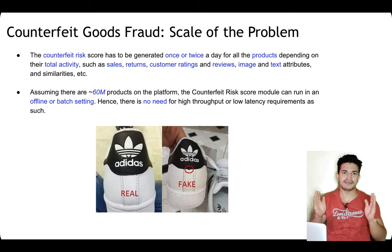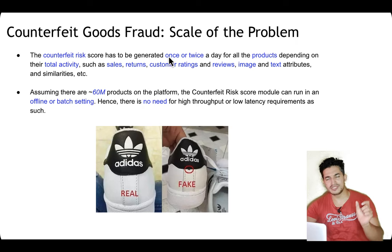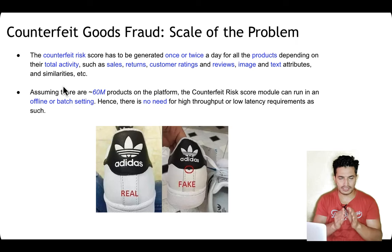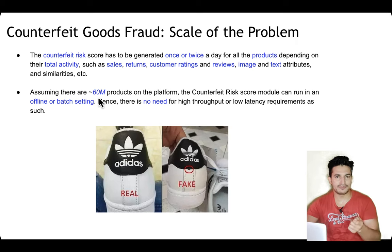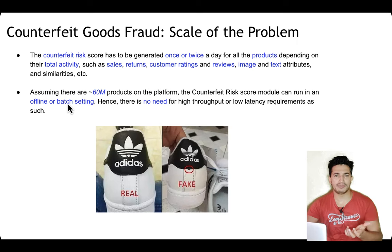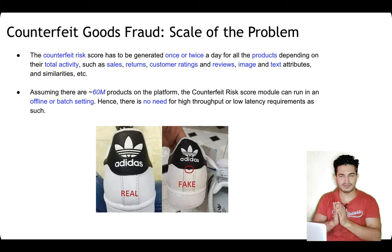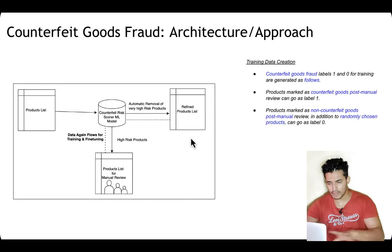Next, understand the scale of the problem. Unlike the returns fraud case which required a real-time system, the counterfeit risk score model only needs to run once or twice a day for all products, based on total activity like sales, returns, customer ratings, reviews, image and text attributes, and other similarities. It is not a personalized model — the counterfeit risk score is product-level, not buyer-specific. Assuming around 60 million products on the platform, the model can run in batch mode twice a day, with no need for high throughput or low latency. Very high risk products are automatically removed; medium-to-high risk go for manual review.